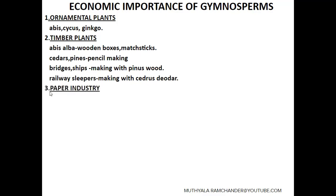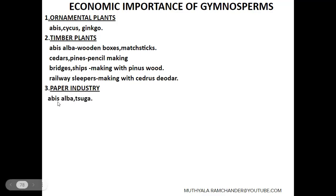The third economic important point is the paper industry. Some gymnosperms are used for the making of paper. Examples include Abies alba and Picea. These plants produce wood and resins used in the paper industry.